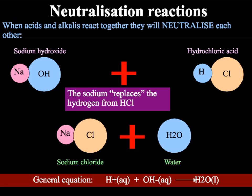This is where acids and alkalis link to titrations. When we carry out a titration, we are carrying out a neutralisation reaction. The point of a titration is to find out exactly how much acid is needed to neutralise a quantity of alkali, or vice versa — so we could also look at how much alkali is needed to neutralise a known quantity of acid. Before we look at the calculations, we need to recap how to carry out a titration safely.